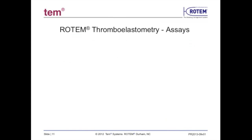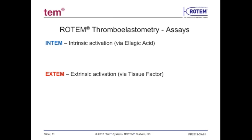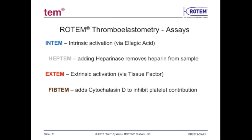The current available Rotem assays used to provide the differential diagnosis of hemostatic imbalance are: Intem via intrinsic activation using ellagic acid; Extem via extrinsic activation using tissue factor; and Heptem — a modification of Intem — which, by adding heparinase to the intrinsically activated test, neutralizes heparin within the sample and can provide information about the patient's ability to clot after heparin reversal.